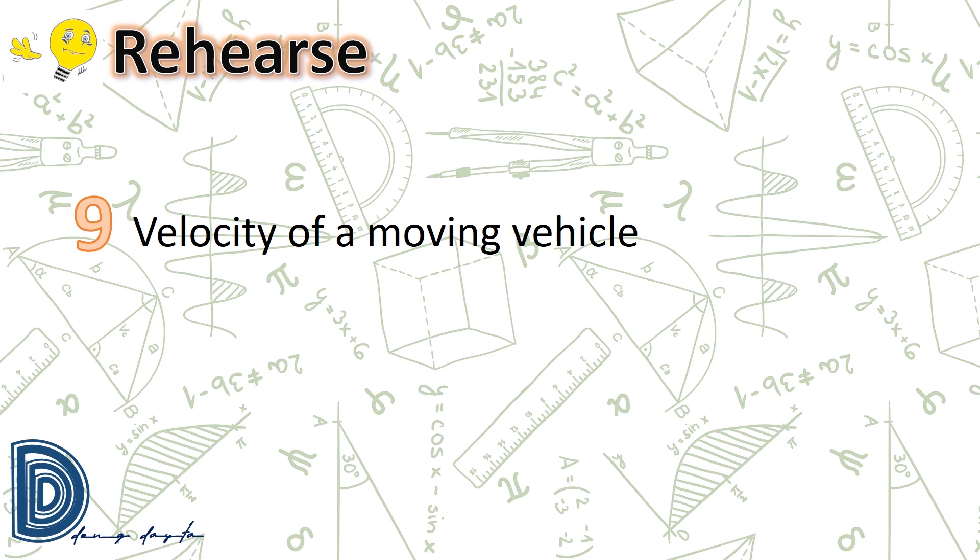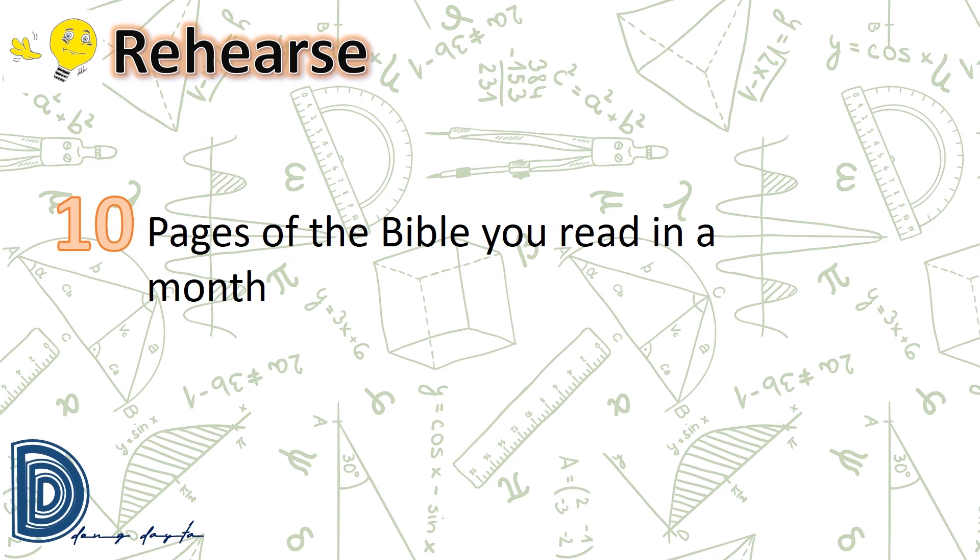Your answer: it's continuous random variable. Last one: pages of the Bible you read in a month. Answer: it's discrete random variable.